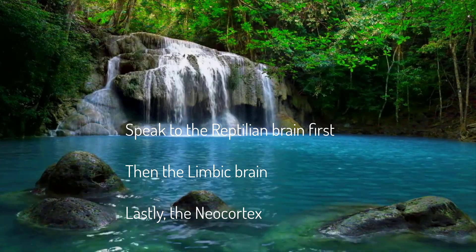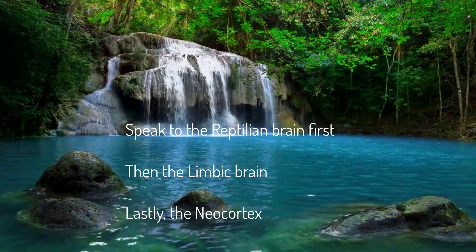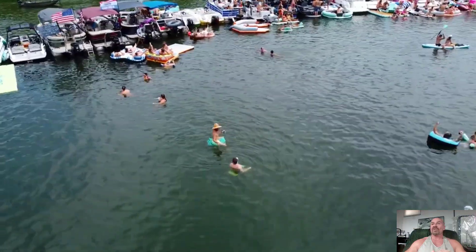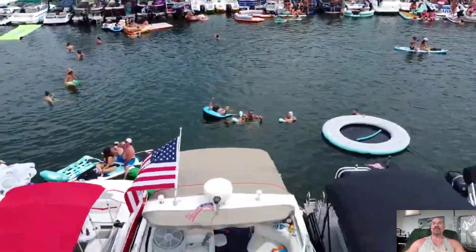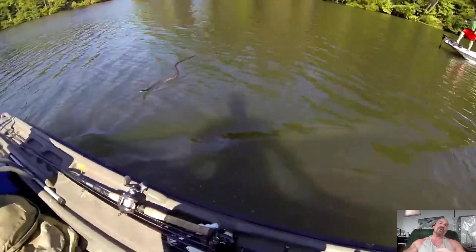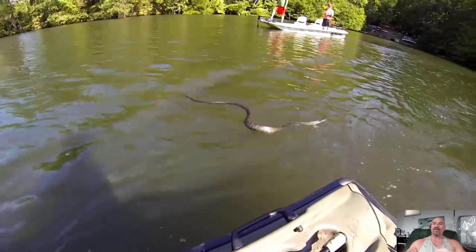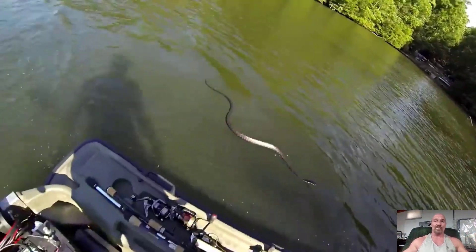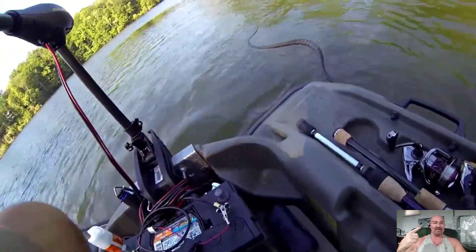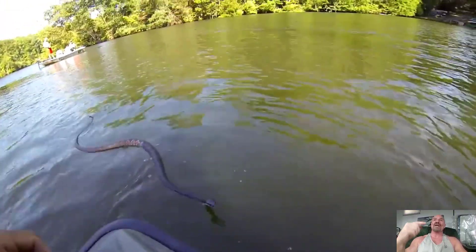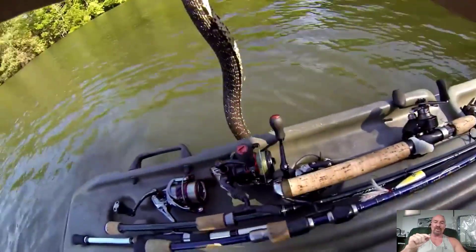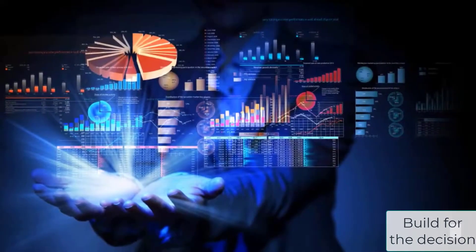The reptilian brain can make survival decisions before your other brains can even begin to process the data. I know this for a fact. We were out at the lake — I was floating on the raft talking with friends and family — when I felt something brush my leg. Before I could look and see, I had reached down, grabbed, and thrown a four-foot water snake at least 30 feet across the water. I literally grabbed and threw a snake before my neocortex could even register that I had a snake on my lap. That's the reptilian brain, and that's what we try to speak to in our marketing.